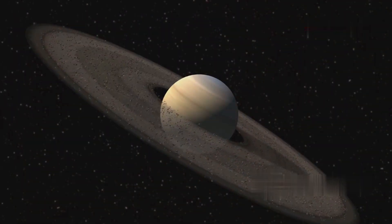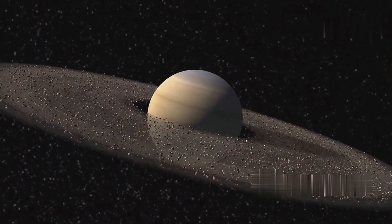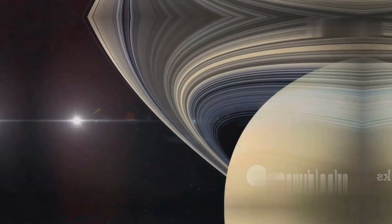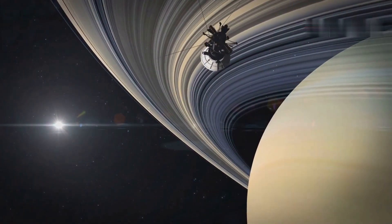Further out, we find the gas giants: Jupiter, Saturn, Uranus and Neptune. These planets are known for their massive sizes and thick atmospheres. These planets are much larger than the inner planets and are composed mostly of gas and ice.